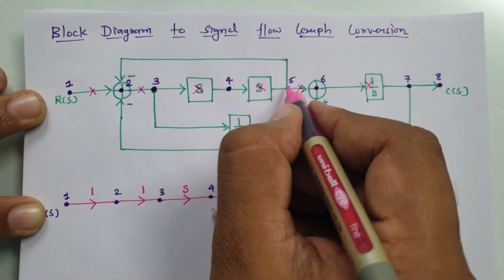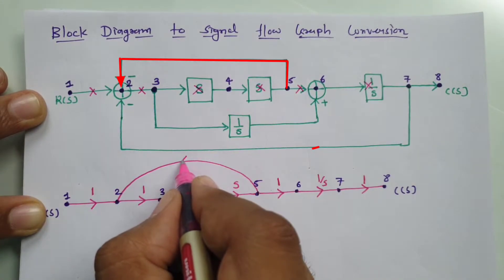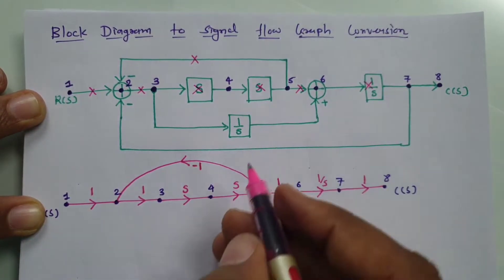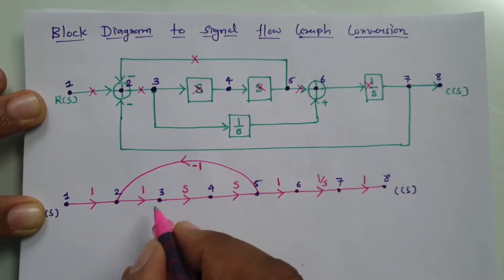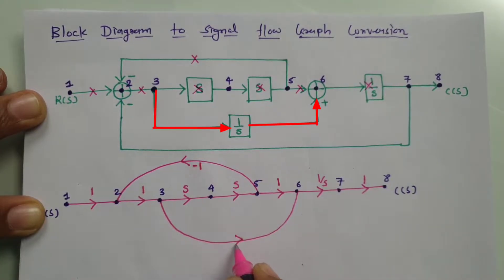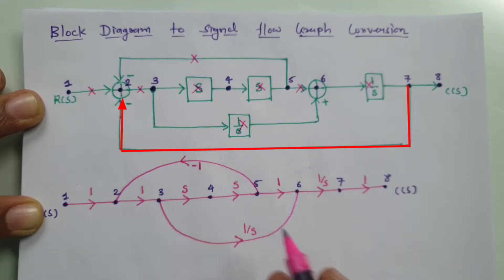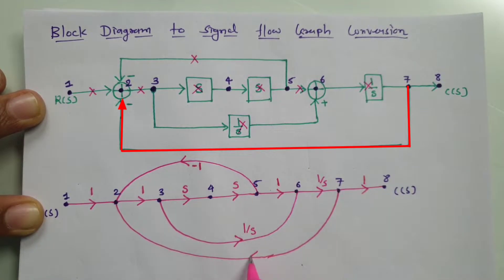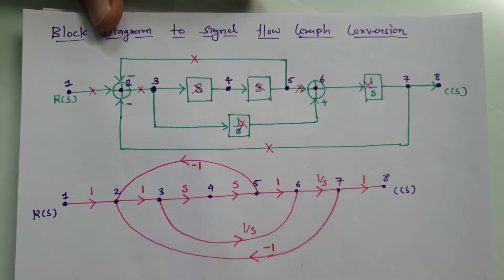Now we need to connect between five and two: direction is from five to two, and since there is a minus sign, the gain is minus one. In between three and six, direction is from three to six and gain is 1/S. And in between seven and two, there is a connection from seven to two with a minus sign, so the gain is minus one. That is how we can have a connection of all the links as seen in the block diagram. Now we have the signal flow graph.